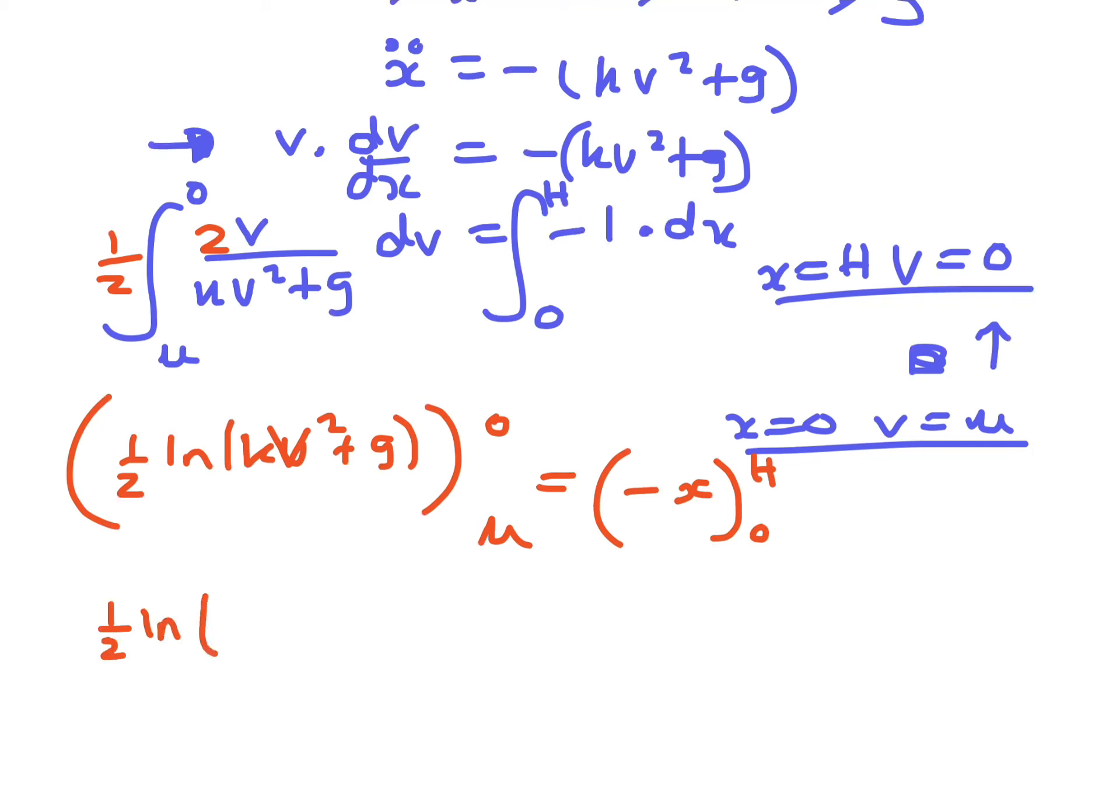So it's a half ln of 0 plus g, minus a half ln of ku squared plus g, equals minus h minus minus 0. So it's a half ln g minus ln of ku squared plus g equals minus h.